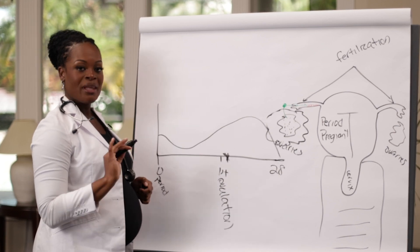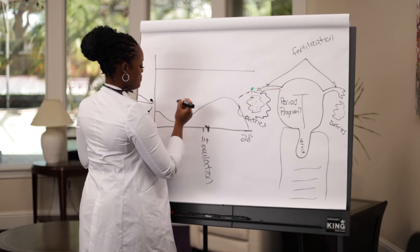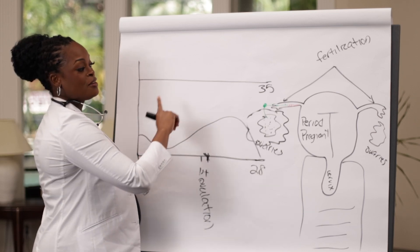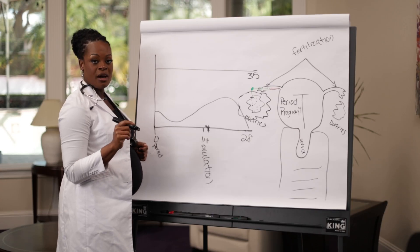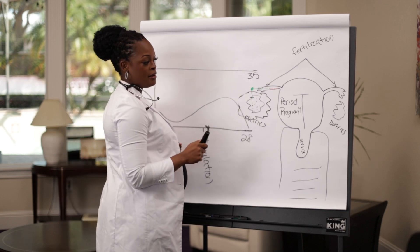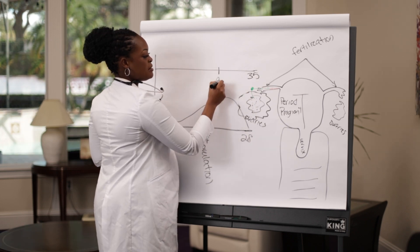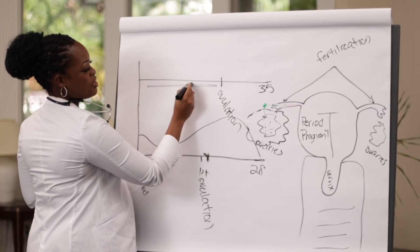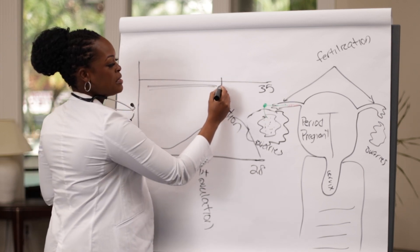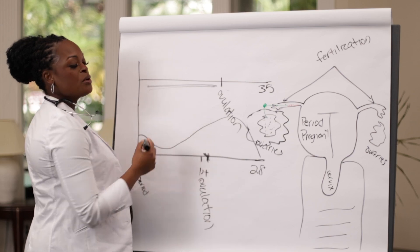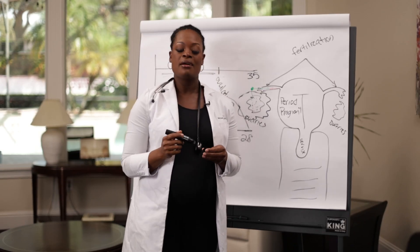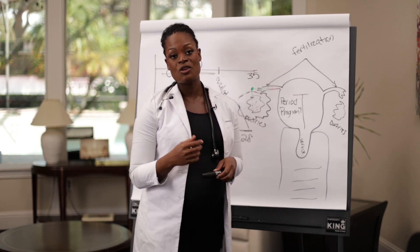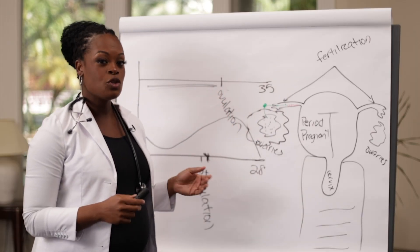How does that look for someone who has a longer cycle? Let's do 35 days. If your cycle length from the first day of the last period to the first day of the next is 35 days, to know when you'll ovulate you subtract 14 from 35, which gives you day 21. That's the day of ovulation, meaning you have a longer period of time before ovulation. But what's always the same is the 14 days before your next cycle when ovulation occurs. The same concept applies if you have a shorter cycle.